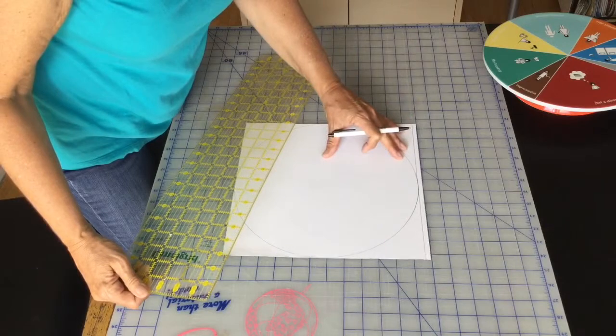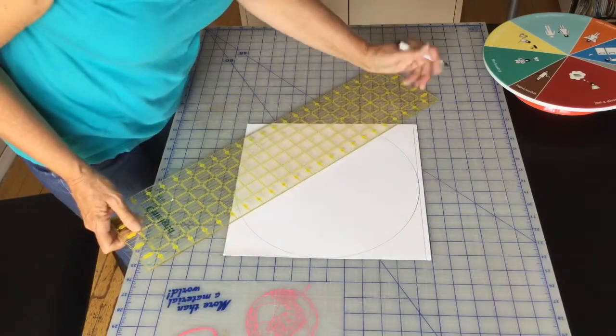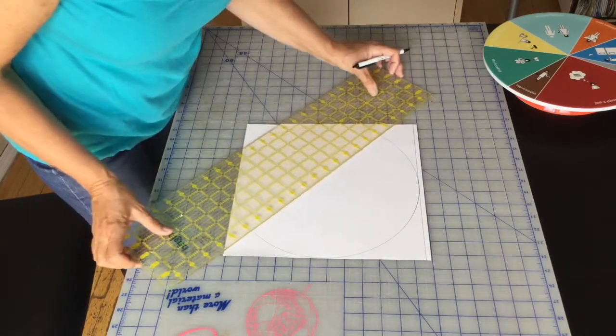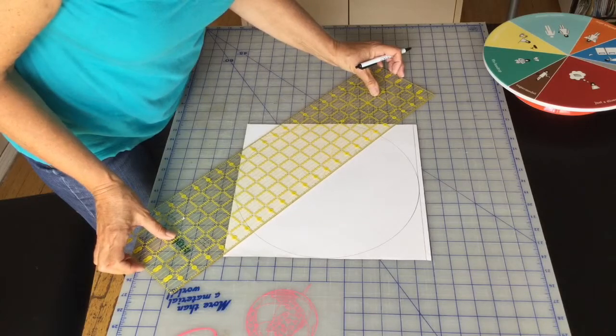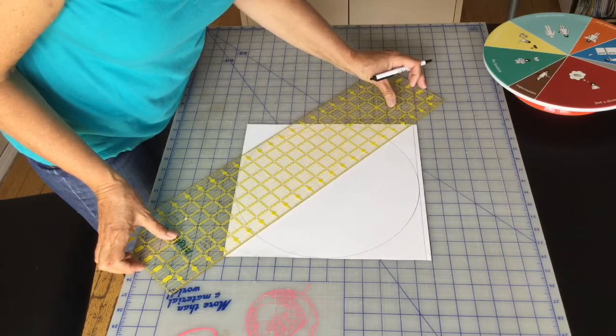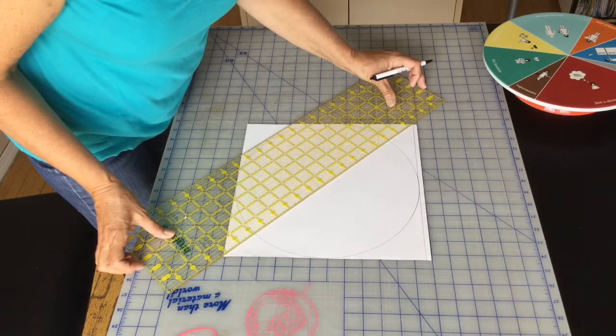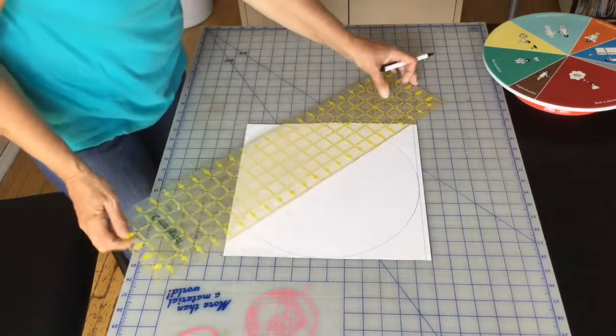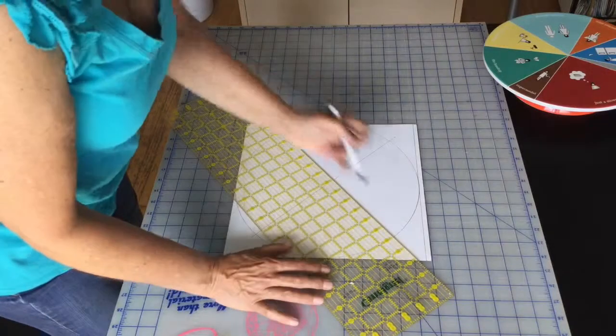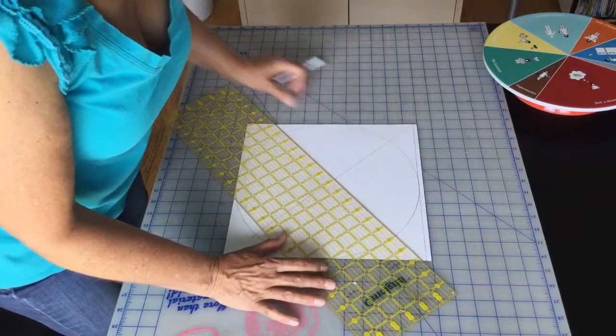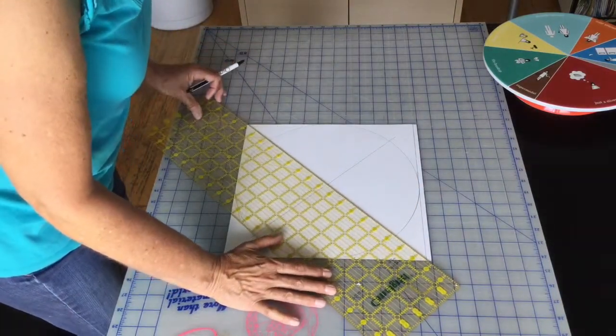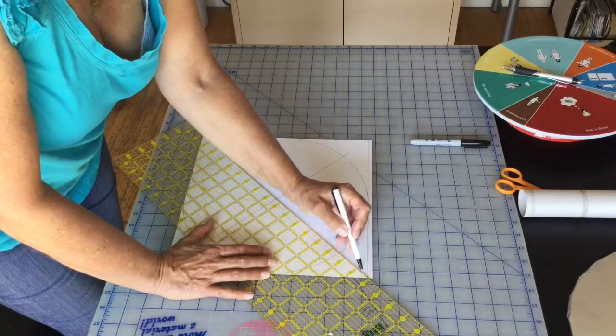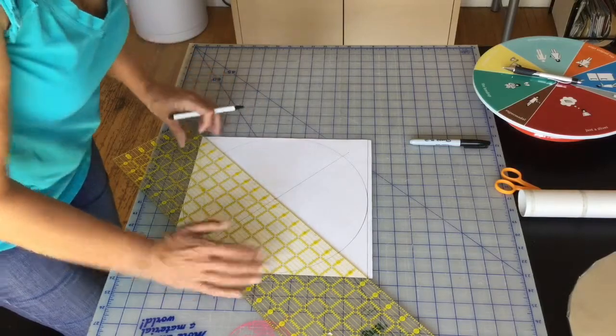So now I'm going to take it from this corner right here where my line was drawn into the other corner of my square and then just simply draw a line through the circle. And on this side I'm using my new line down to the other corner.